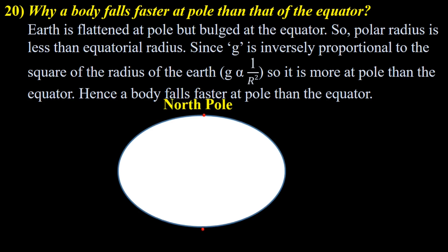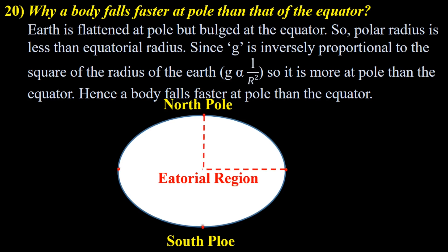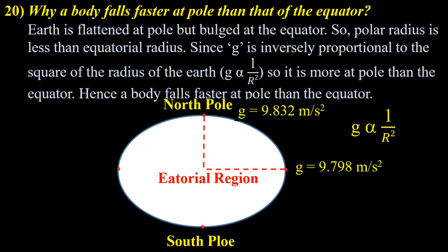Look at this — this is the North Pole, this is the South Pole, and these are the points at the bulged part of the Earth, that is the equatorial region. The radius of the Earth at the pole is less; radius at the equator is more. That's why, since g is inversely proportional to R², g is more at the pole and less at the equator. Since g is more at the pole, the body falls faster. But g is less at the equator, so the body falls slower at the equator.